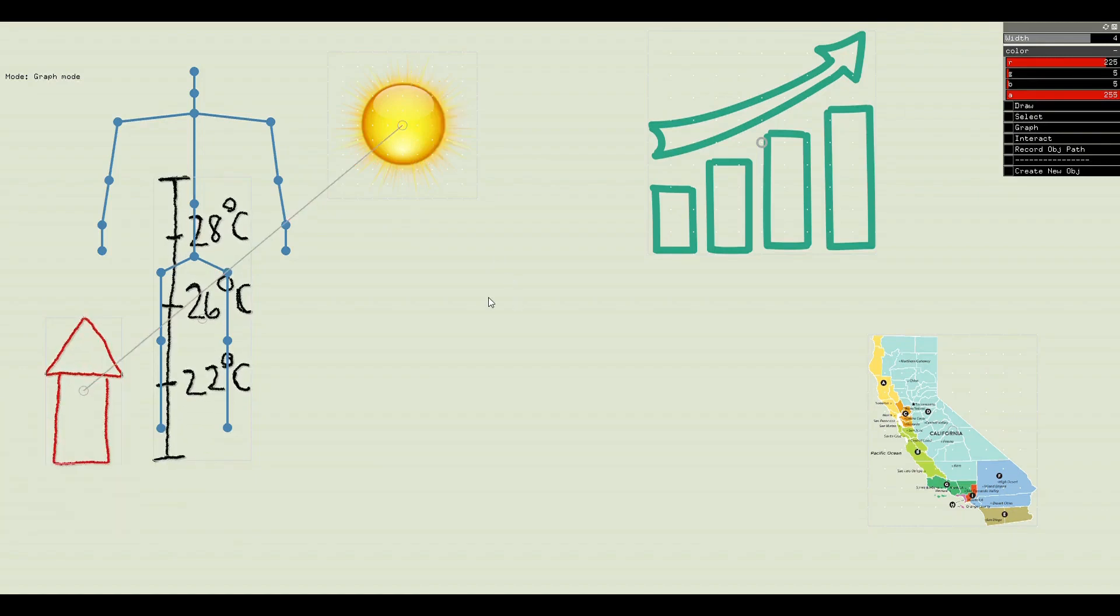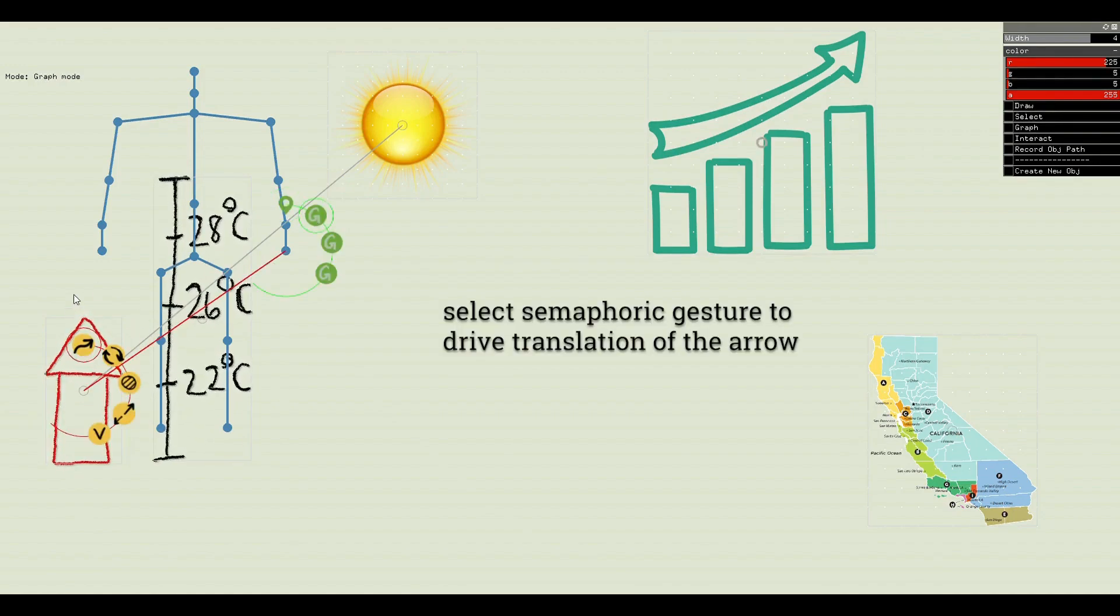Semaphoric gestures are hand movements used for indirect manipulation. Let's control an arrow from a distance by using the pointing and semaphoric gestures.